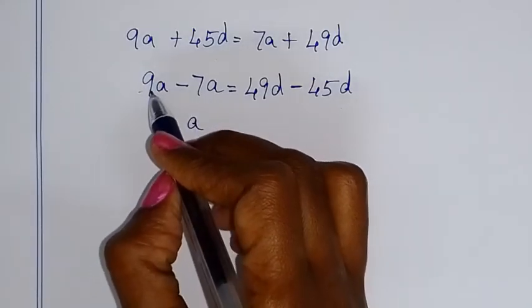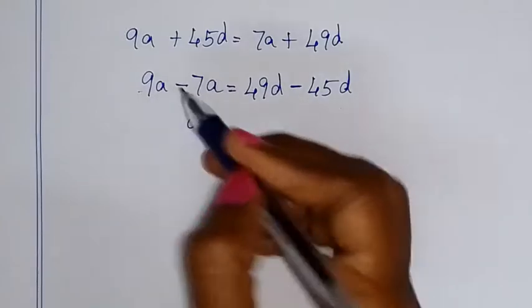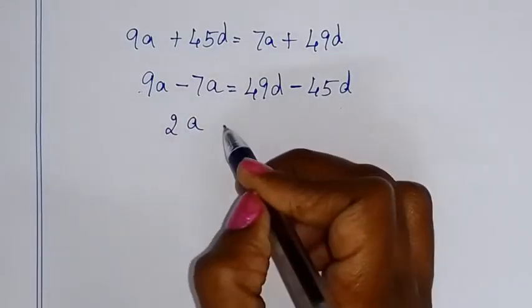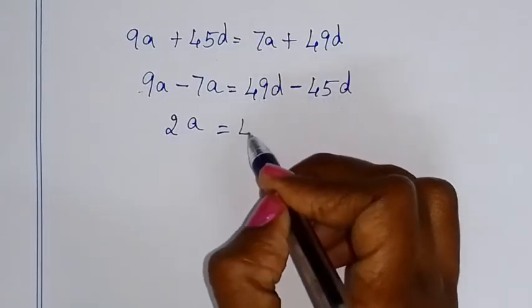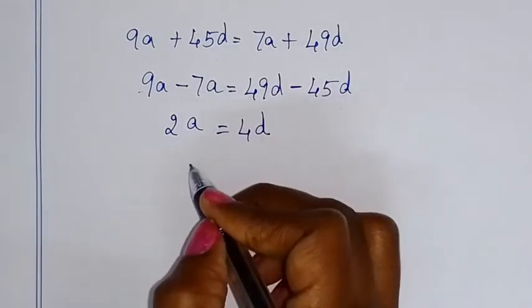9 is greater, so 9 minus 7 is 2A. This equals 49D minus 45D, which is 4D.